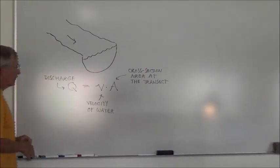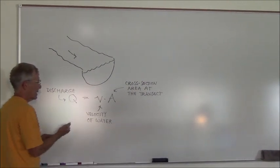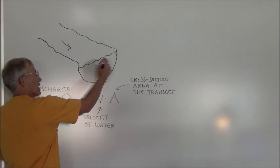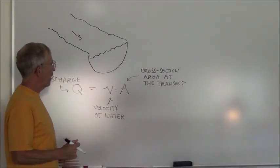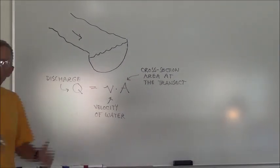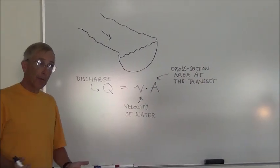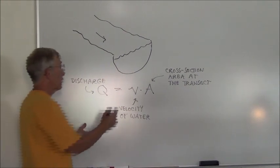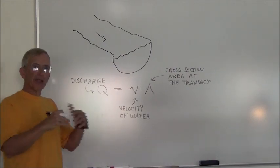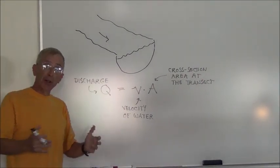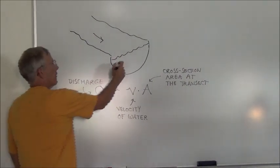This looks pretty simple, but there are some complications. Think for a minute about how you might measure the area. We have measuring tapes, yardsticks, and surveying equipment — those are the kinds of tools we use to figure out what this area is. That's not impossible; we can do that. It's especially feasible in streams that are shallow enough that we can wade through them.